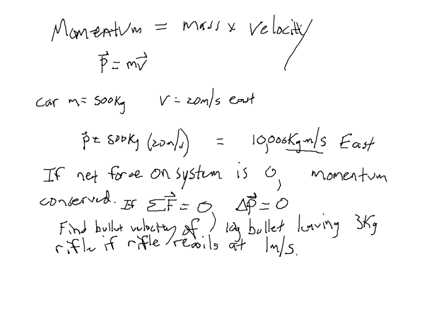By recoil, we mean the kick of the rifle. If you shoot a rifle, the bullet goes forward and the rifle kicks backward. So this particular rifle will kick backward at one meter per second.